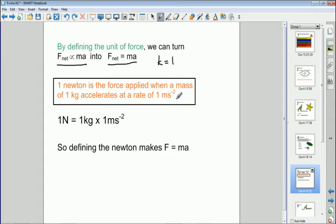So mathematically speaking, 1 Newton is equal to 1 kilogram times 1 meter per second squared. So this is our F, and this is our M, and this is our A. So F equals Ma when 1 Newton is equal to 1 kilogram times 1 meter per second squared. So by defining the Newton, we can turn that proportionality into an equation with a constant of 1.